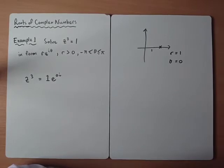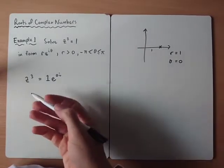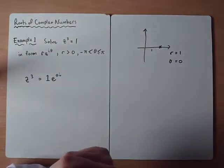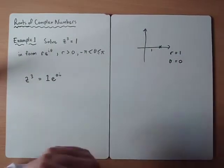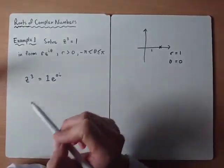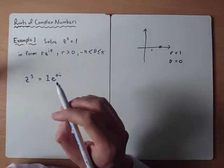And obviously that should be fairly obvious that e to the 0 is equivalent to 1. So what we've done here is we've rewritten this in an equivalent form. Now if we cube root this, we're still only going to get one answer. Remember we're looking for 3 answers.